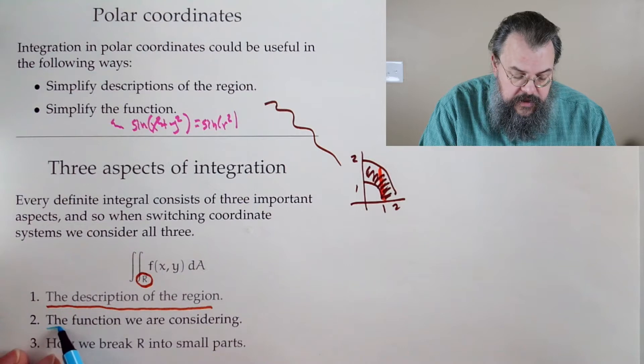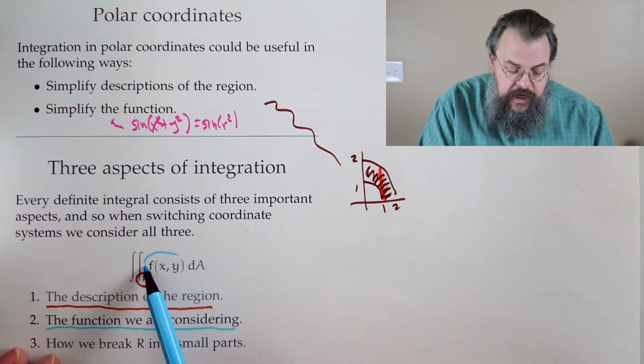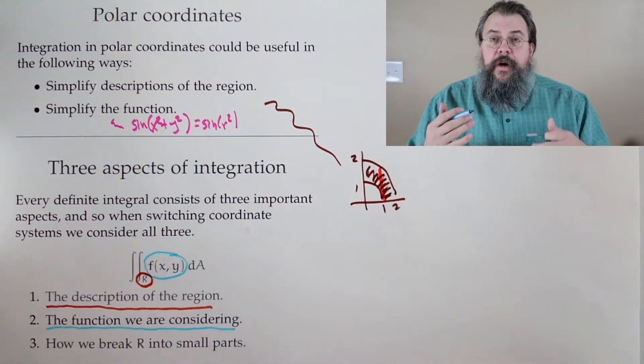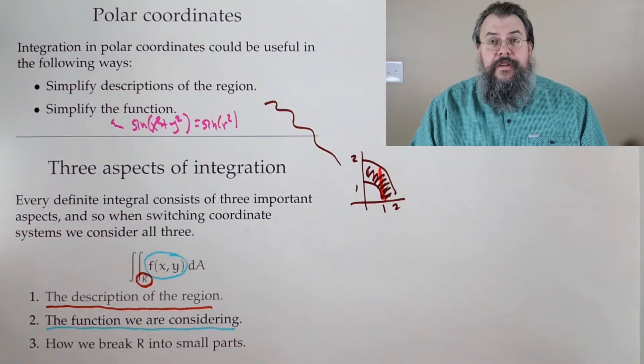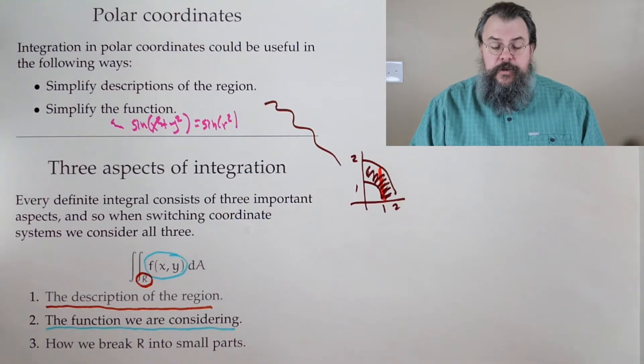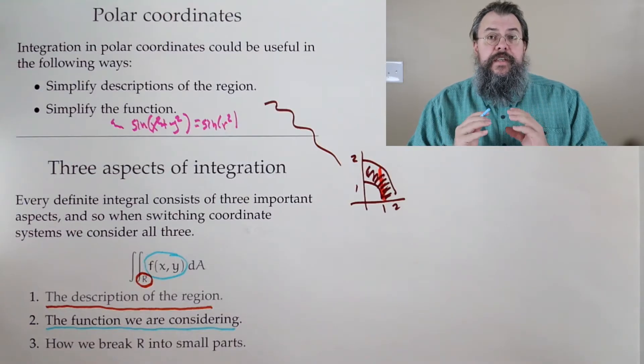The other thing, well, I should say the second thing is your function. And it has to be what? Well, it has to be a function in terms of the coordinates that you're using. All right. So it could be x, y, or it could be r, theta. Now it's easy to say, oh, if I have a function of x and y, I can switch it to a function of r and theta.